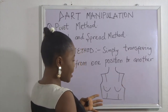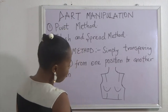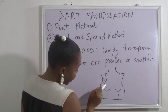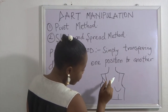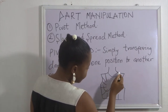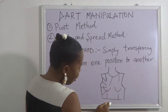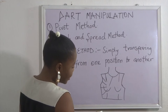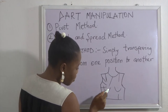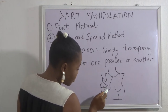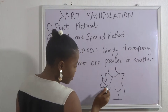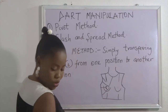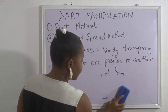Basically, your dart could come from anywhere — from the side, the shoulder, the waist, or the neckline region. The key guideline is that your dart must point towards the bust area. The bust is the apex. The dart could come from any of those regions, as long as it points to the apex.